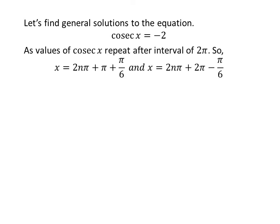Let us find the general solutions. As we know the values of cosecant of x repeat after the interval of 2 times pi, the general solutions are 2 times n times pi plus pi plus pi upon 6, and 2 times n times pi plus 2 times pi minus pi upon 6, where n is an integer.